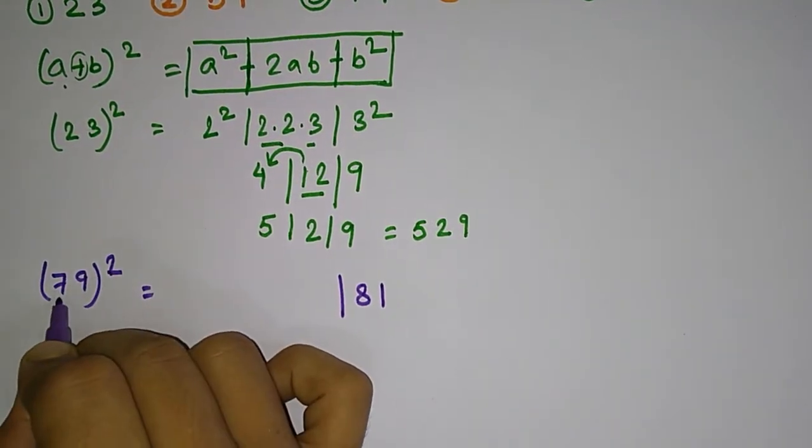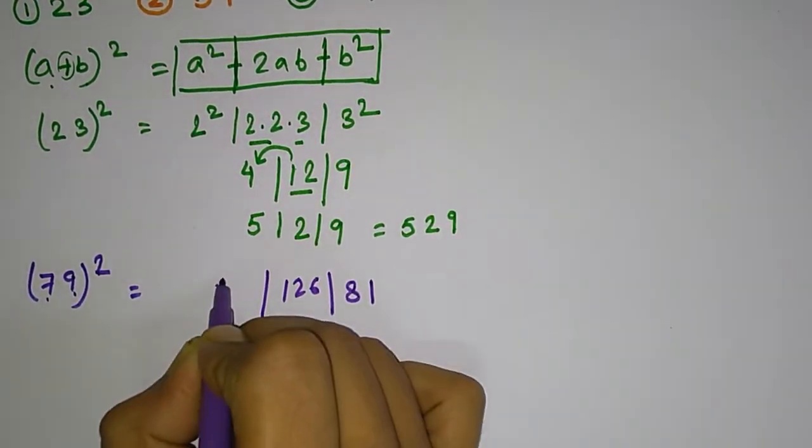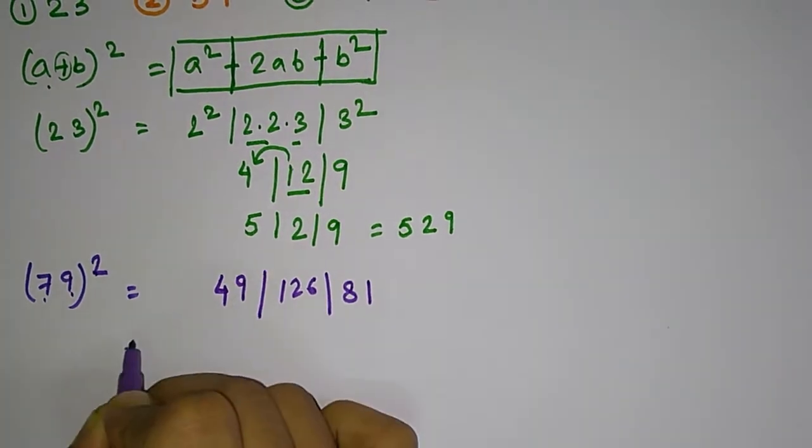Next you have to multiply 2 into 7 into 9, that is 2 times 7 is 14, 14 times 9 is 126, right? And 7 square is 49.